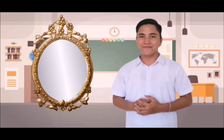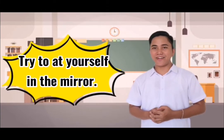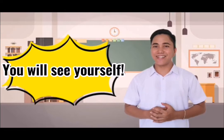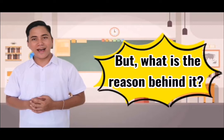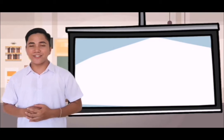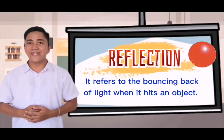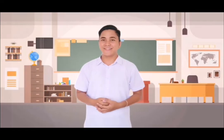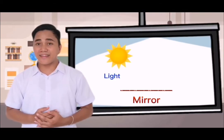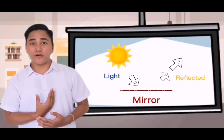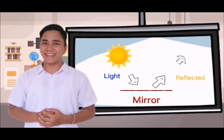Now, do you have a mirror at home? Try to look at yourself in the mirror — of course, you'll be able to see yourself. The reason behind this is a process called reflection. Reflection is the bouncing back of light when it hits an object, just like a ball thrown against a wall that bounces back. This is why we can see ourselves in the mirror — the light hitting the mirror bounces back toward us.